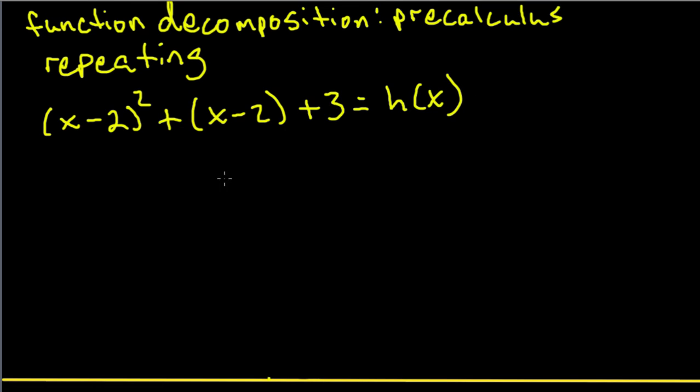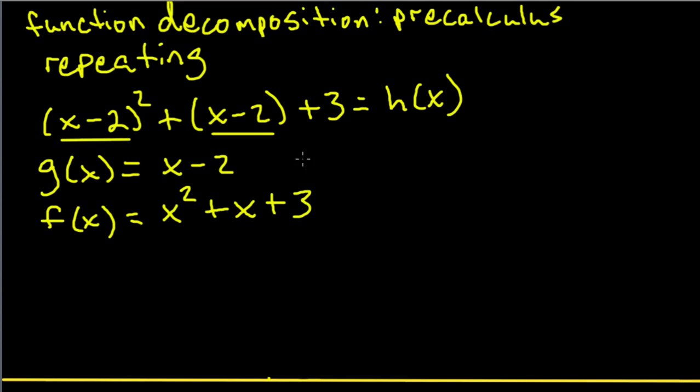Now as you see, x minus 2 is repeated. So we can say, okay, g(x) is what's being repeated. And f(x) is if we cover that x minus 2 with our finger and put an x there, we get x squared plus x plus 3. And that's all there is to it. Now you could take this f(x) and compose it with g(x) and you'll get back to your original h(x).